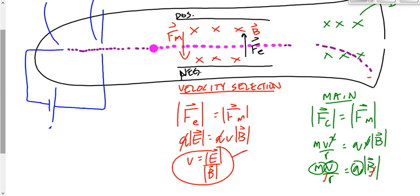Once he has this speed, he can substitute it into the main chamber equation. He had two givens and three unknowns before; now he's got three givens and two unknowns. He still can't solve for Q or M individually, but it's better.